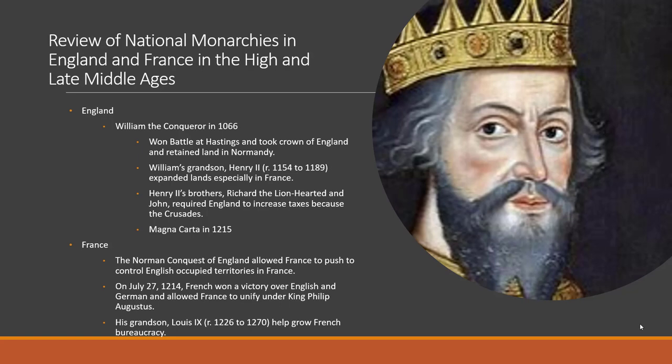Turning to France: the Norman Conquest opened an opportunity for the French to push back against English-occupied territories. The French wanted to control Normandy while the English kept expanding. On July 27th, 1214, the French won a major victory over the English and Germans, allowing France to unify under King Philip Augustus.